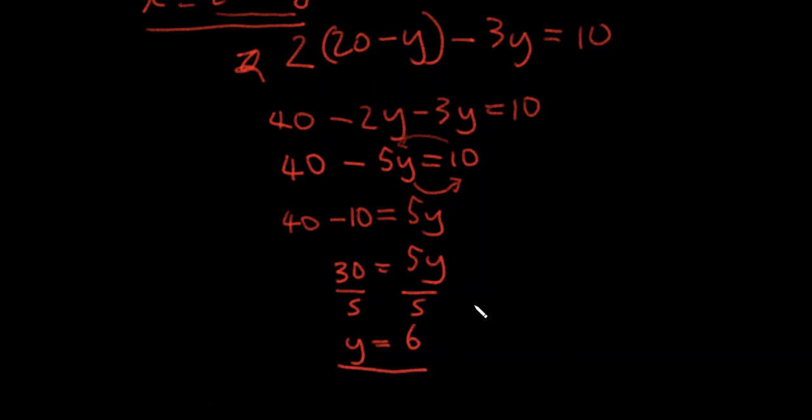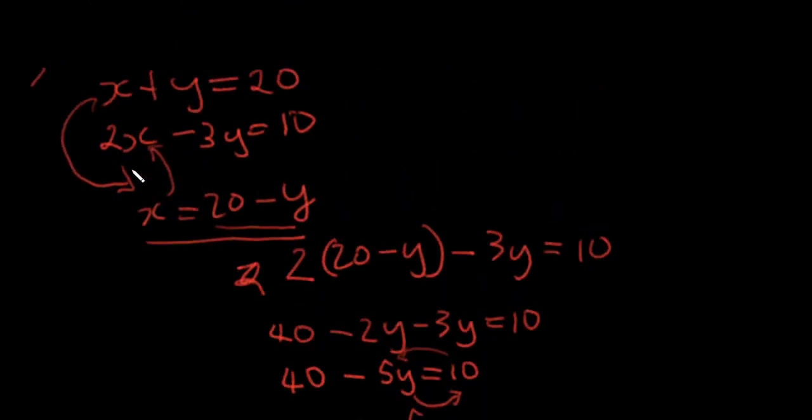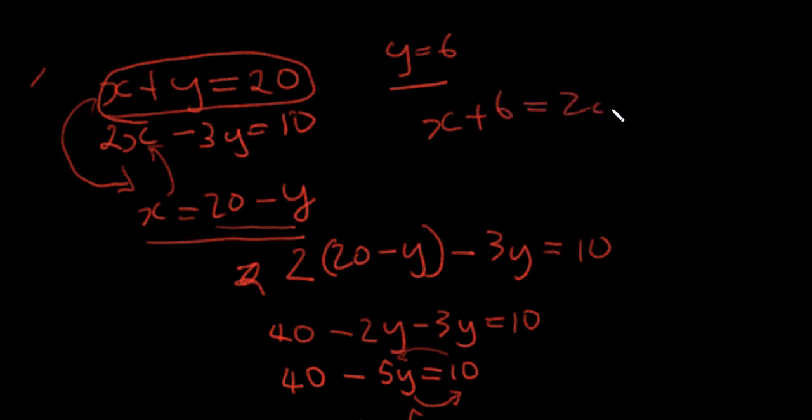And since we know y is equal to 6, we just found that out. So x plus y, which is 6, is equal to 20. So x is equal to 20 minus 6, which is 14. So x is simply 14.